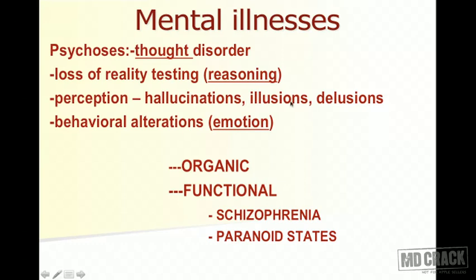There are three perceptual terms in psychosis: hallucination — perceiving something that does not exist (e.g., seeing a snake on the ground when nothing is there); illusion — misperceiving something that exists (e.g., looking at a rope and believing it's a snake); and delusion — a strong, firm misbelief that is very difficult to eradicate.